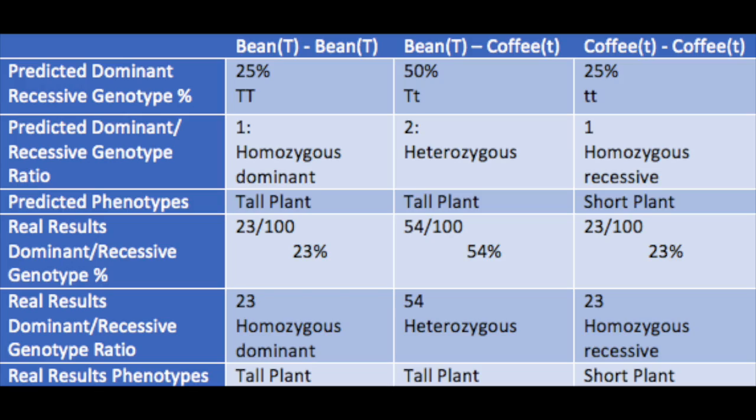The predicted results for bean-bean were 25% probability — we got 23 out of 100, which made up 23%. As you can see, the same happened with coffee-coffee. For bean-coffee, the predicted results were 50% probability, and we got 54 out of 100, which made up 54%. You can see that our results were very close to the predicted ones.